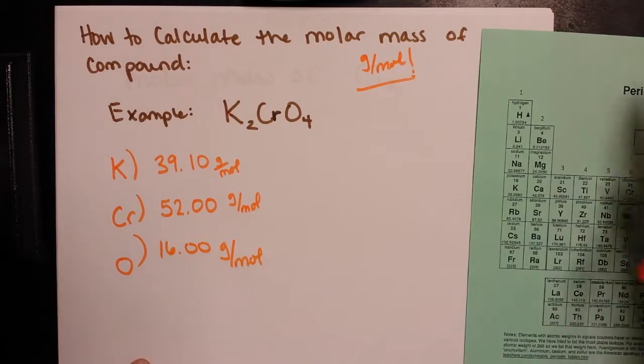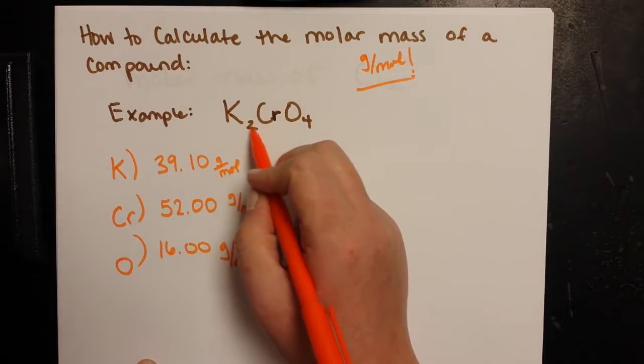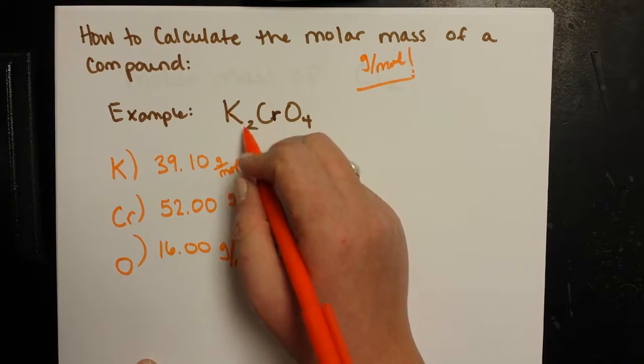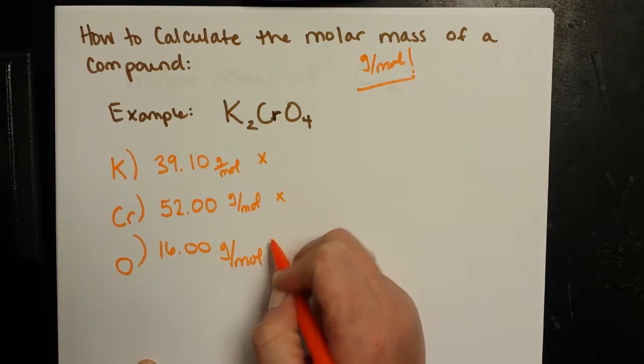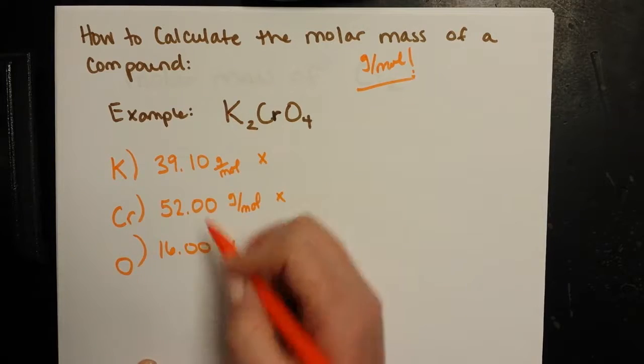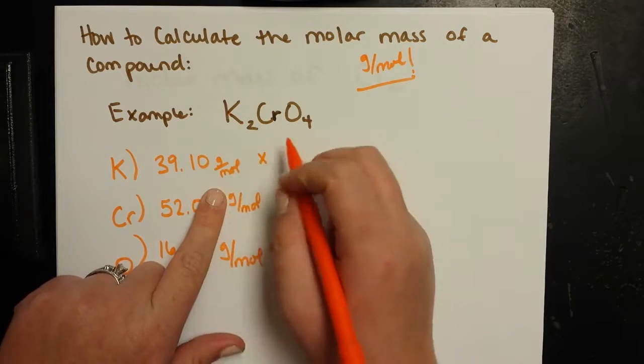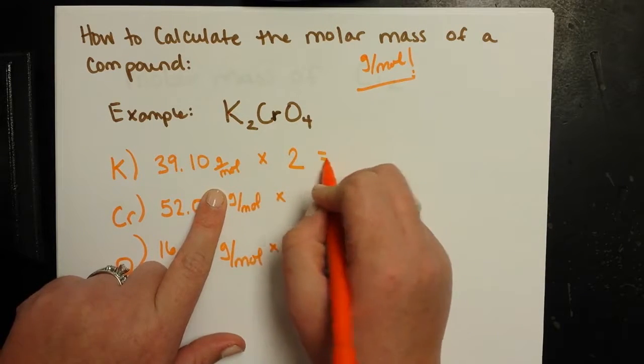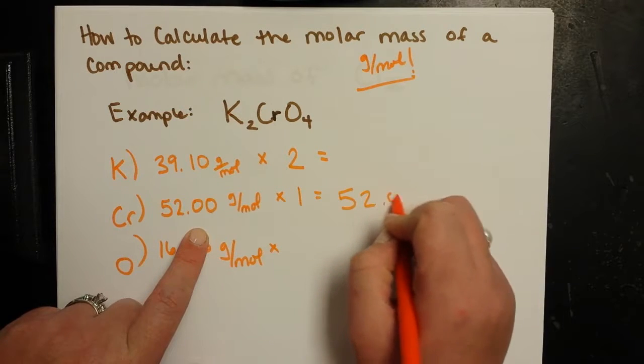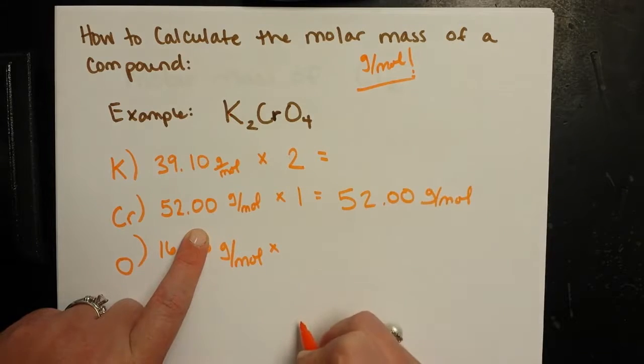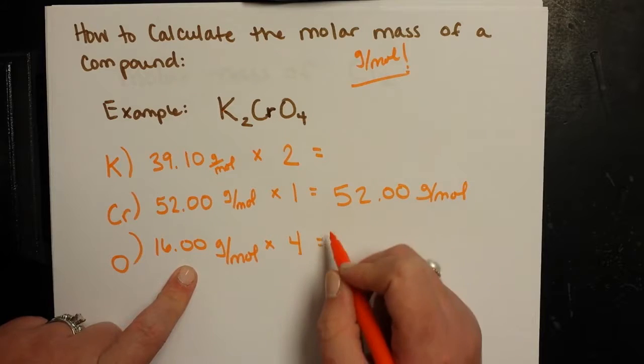All right, once I've got that information from the periodic table, I'm done with the periodic table. Then what I do is I take the subscripts from the formula and multiply each of my molar masses for my elements by how abundant they are in that formula. So if I've got two potassiums here, I'm going to have twice that mass. I've got one chromium, so I'm going to have one times that mass. I'll go ahead and write that out here. And I've got four oxygens, so I'm going to have four times the mass of oxygen.